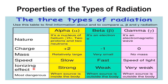Looking at the ionizing effect: the ionizing effect of alpha particle is strong, beta particle is weak, and gamma is very weak. Regarding danger: alpha radiation is most dangerous when the source is inside the body. Beta and gamma are more dangerous when the source is outside the body, with gamma being the most dangerous externally. This table compares alpha, beta, and gamma nuclear radiation.